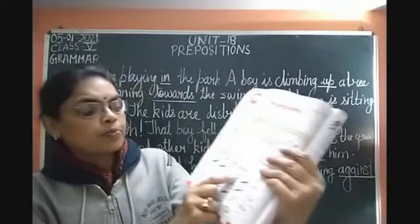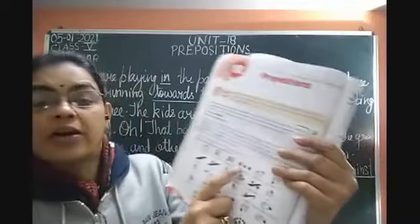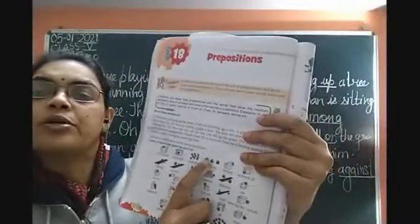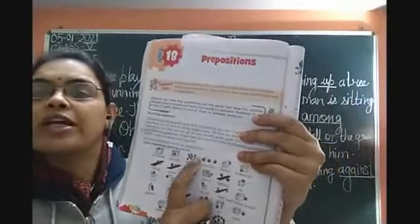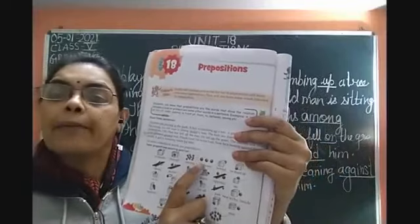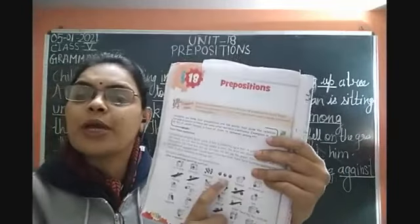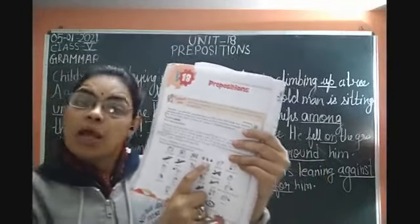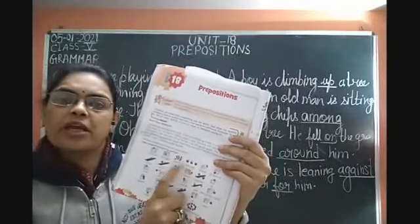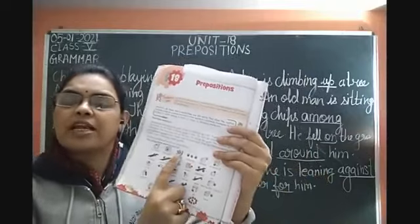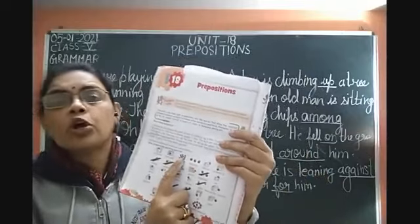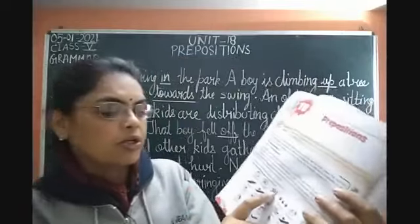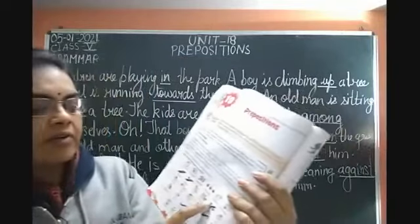In the third picture, the red ball is in the center of many green balls — for that we use 'among.' In the fourth picture, the red ball is between two green balls — jahaan 2 ke beech mein hai, to 'between' use karenge. Jahaan bahut sari ke beech mein hai, us ke liye 'among' use karenge.